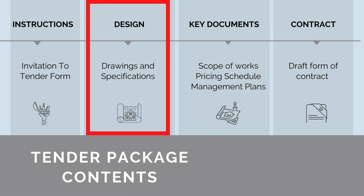Next, we need to provide key design drawings and specifications that show what we require to be built. So if we're procuring a hydraulics contractor, we'll provide the plumbing design, and if we're procuring a structural steel contractor, we'll provide the structures design. The design packages will contain drawings, specifications, reports, calculations, and more.